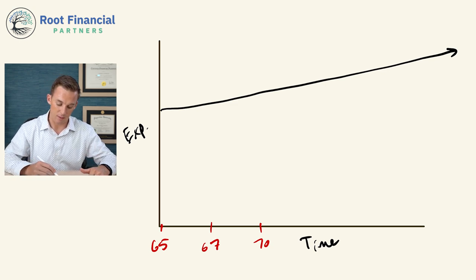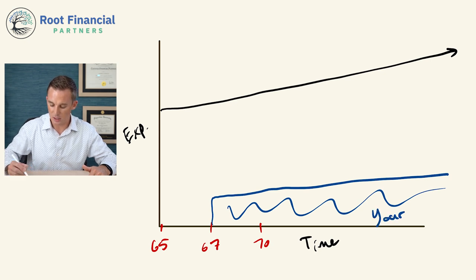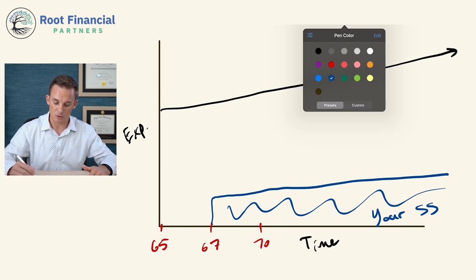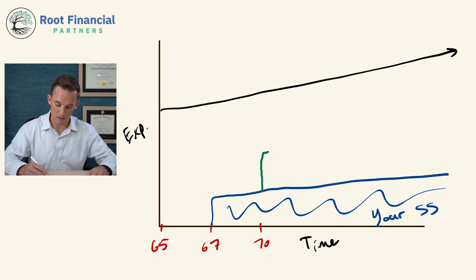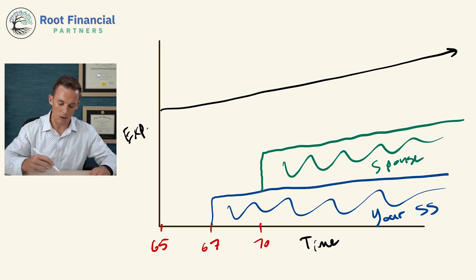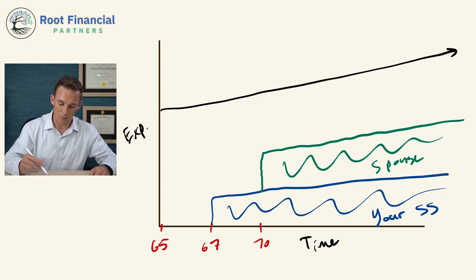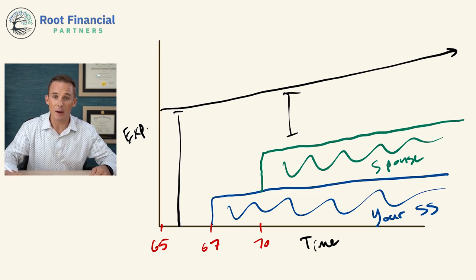Let's assume you're going to collect your social security at age 67. It may be that your social security benefit covers part of your expenses, but definitely not all. Then let's assume your spouse also has social security, but they're not going to collect until age 70. At age 70, there's another level of income, but it still doesn't cover everything. So your portfolio has to fill in these gaps. What you'll notice is these gaps aren't consistent — from age 70 and beyond, there's one amount that needs to come from your portfolio, but when you first retire there's a much larger amount.